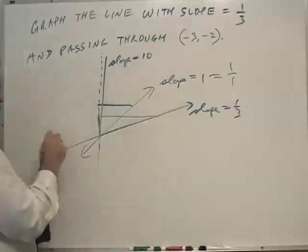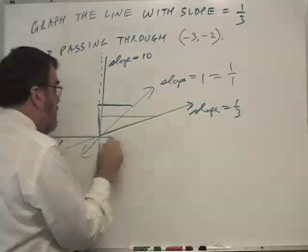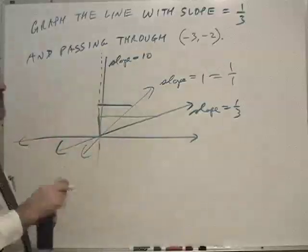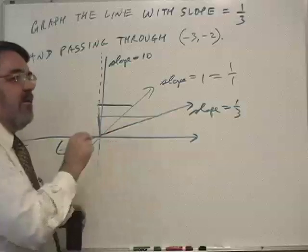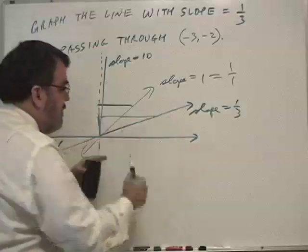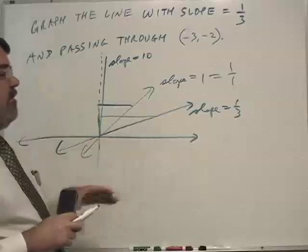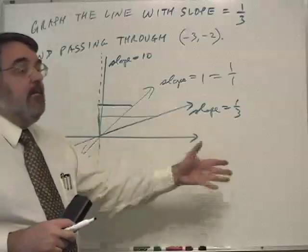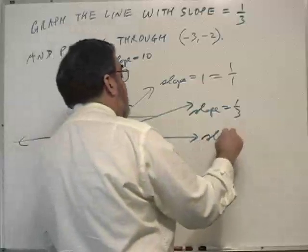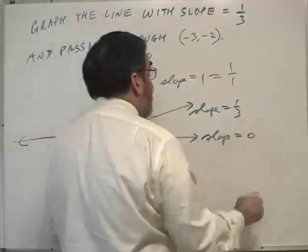Now a horizontal line has what slope? Well, the rise is zero and the run is some number. So if you were to calculate a slope, you would get zero divided by a number, which would be zero. So horizontal lines have a slope of zero.